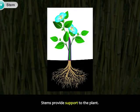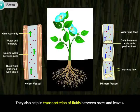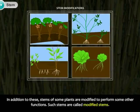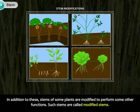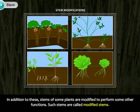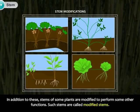Stems provide support to the plant. They also help in transportation of fluids between roots and leaves. Stems act as a site for food storage. In addition to these, stems of some plants are modified to perform other functions. Such stems are called modified stems.